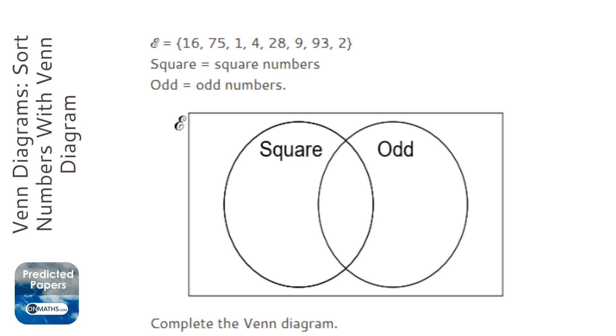We're going to put the square numbers on the left and the odd numbers on the right. Now there's different methods of doing this. What I like to do with this type of question is just do it one at a time.